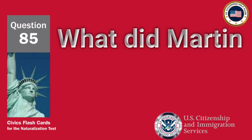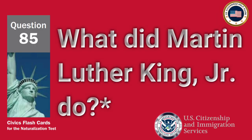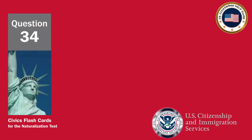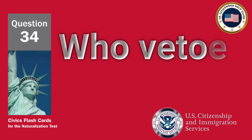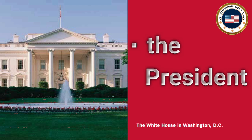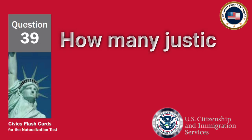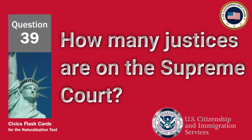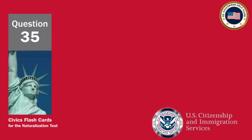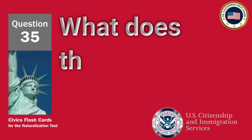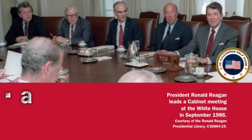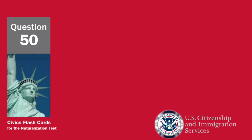What did Martin Luther King Jr. do? Fought for civil rights. Who vetoes bills? The President. How many justices are on the Supreme Court? 9. What does the President's Cabinet do? Advises the President.